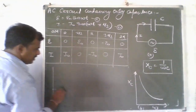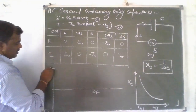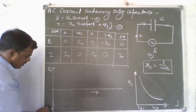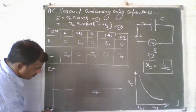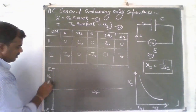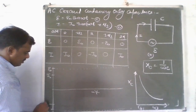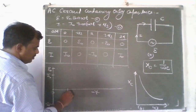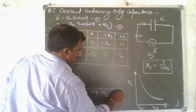Graphically, plotting omega t on the x-axis with maximum values of EMF in positive and negative directions, and similarly the peak values of current I₀ and minus I₀ at 0, pi/2, pi, 3pi/2, and 2pi, we can draw the waveforms of the alternating EMF and alternating current.